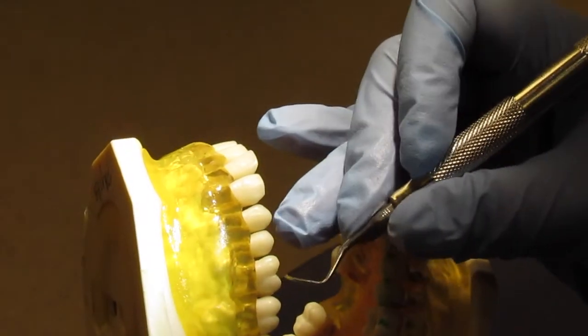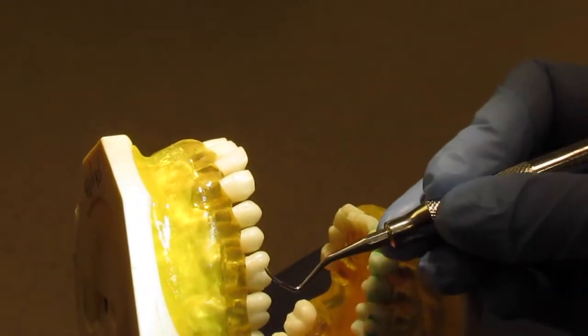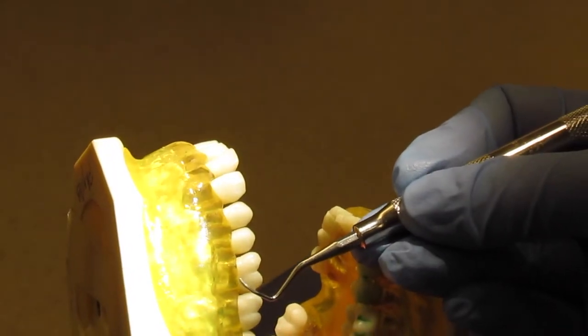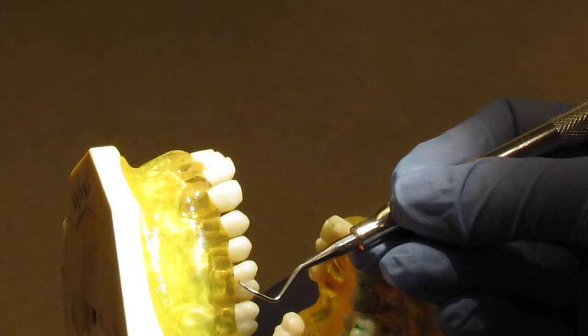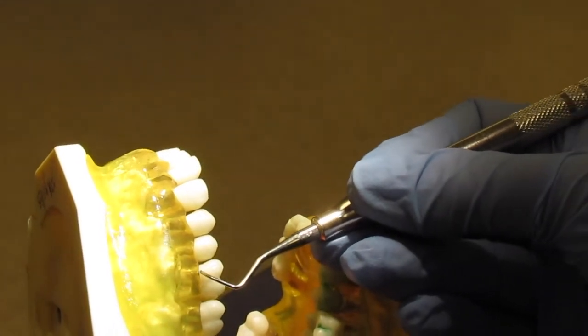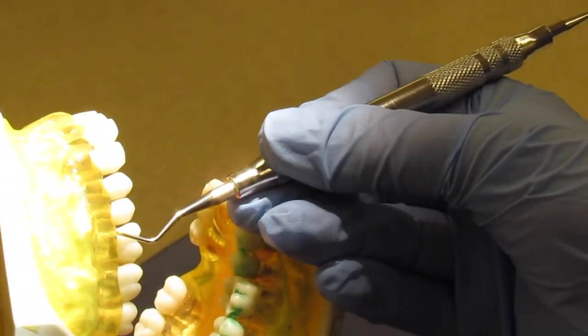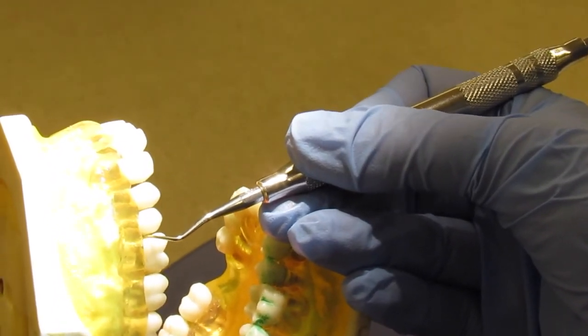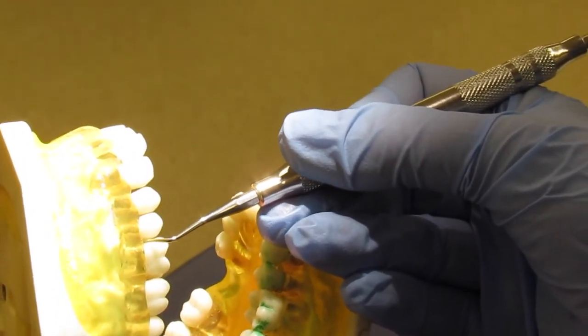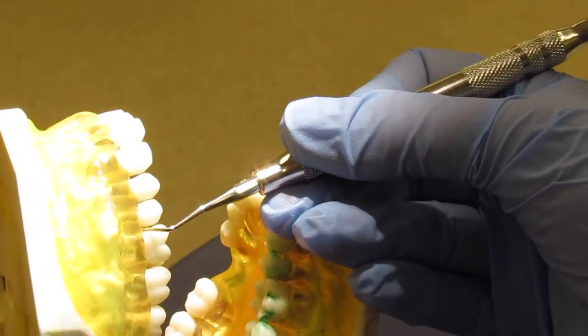Take it out, turn it so it's facing toward the mesial, establish an extraoral fulcrum. At this point you're going to be using a little pull stroke. So each stroke you're pulling and turning, pulling and turning, and go all the way to the mesial area.